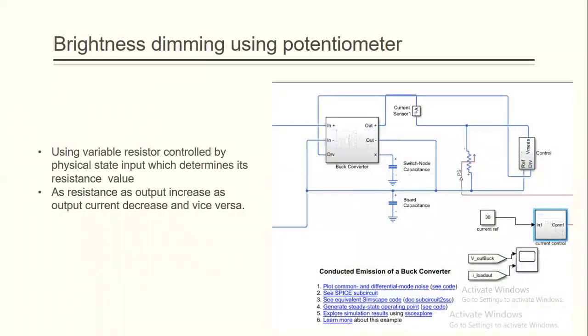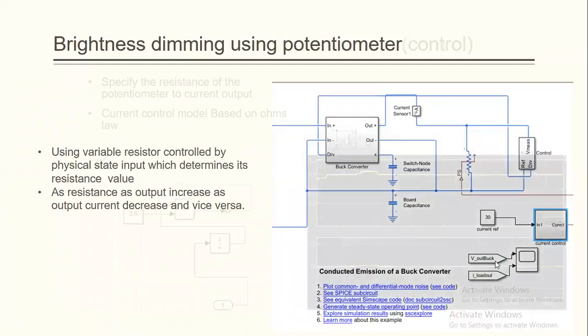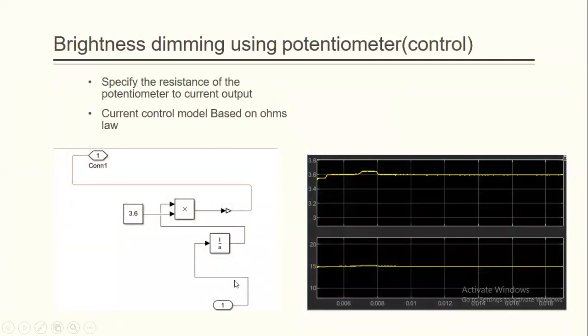Another way to control the output illumination of the LED output current by using a potentiometer right here. So, of course, as we increase its variable resistance, the current will decrease at the output. So, I control the input of this resistance by a current reference and a current control. The current control is a mathematical control model right here. It's based on Ohm's law. So, 1 over current times 3.6, which is the voltage, will give us the resistance depending on the current that I want.